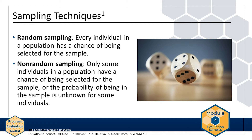In non-random sampling, only some individuals in a population have a chance of being selected for the sample. You might use non-random sampling if representativeness is not the focus of your evaluation, if you can sample only a very small number of individuals, or if you can't be sure that all individuals have a chance to be in the sample. Understanding the limitations of non-random sampling will help you interpret the results.